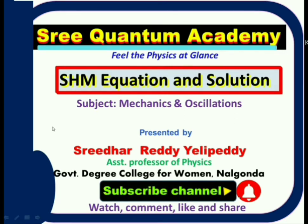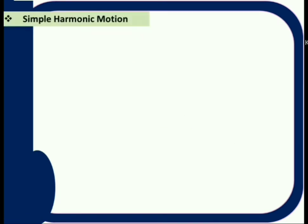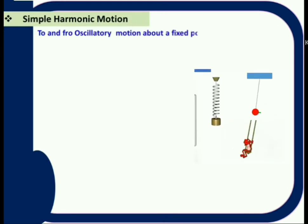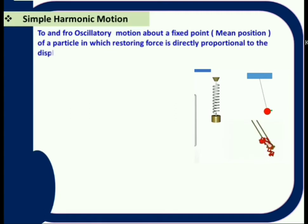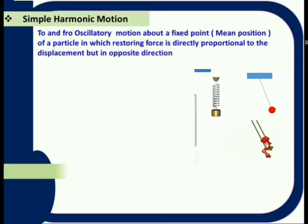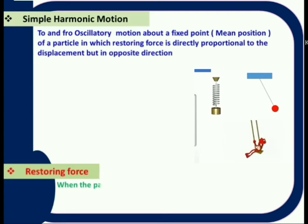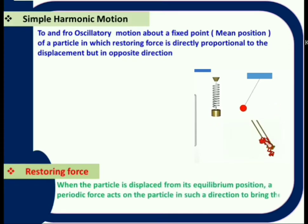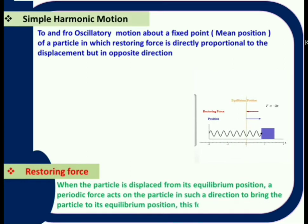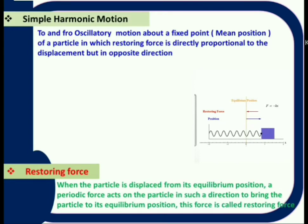Simple harmonic motion is a special type of periodic motion in which a body executes to and fro motion about a fixed point. That fixed point is also called the mean position or equilibrium position. The restoring force acting on the body is always proportional to the displacement and it acts towards the mean position.